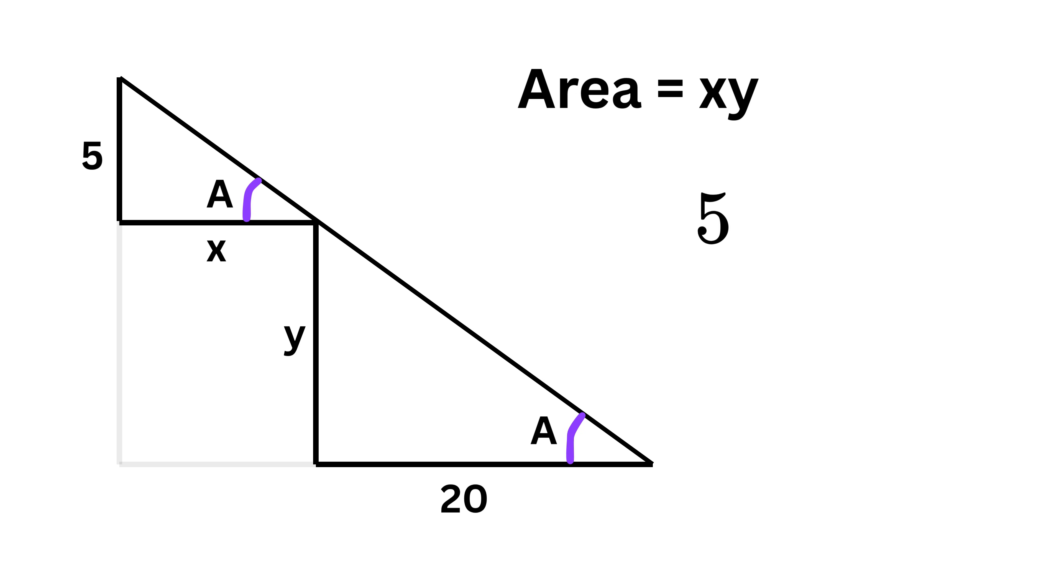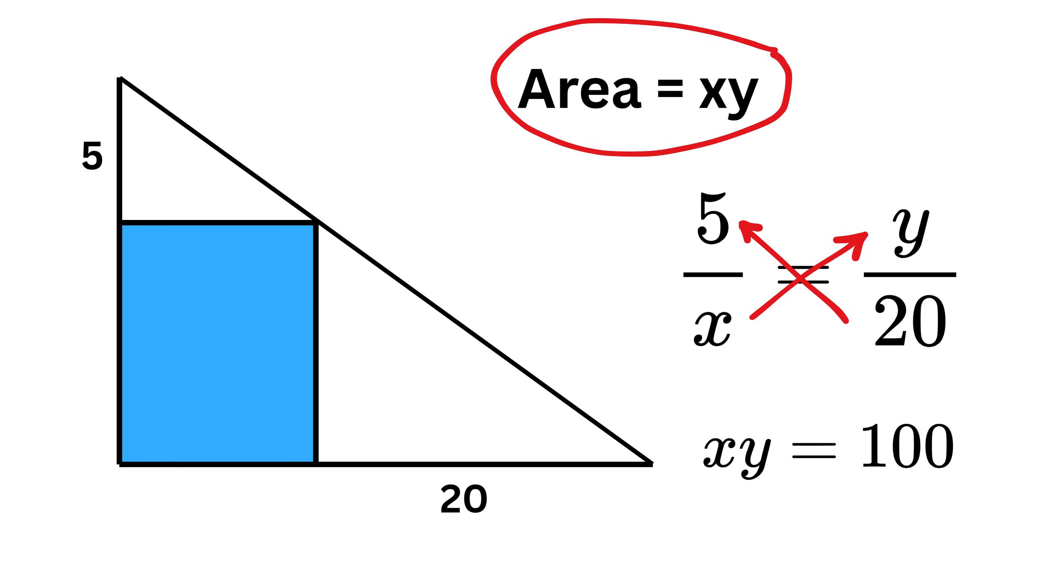This means that this vertical side length of 5 over this horizontal side length of x will be equal to this vertical side length of y over this horizontal side length of 20. Now cross multiply both of them to get x times y equals 5 times 20 or 100 square units. This is the area of this blue shaded region.